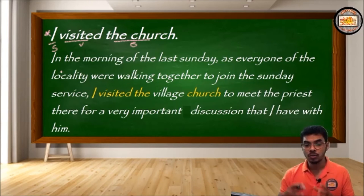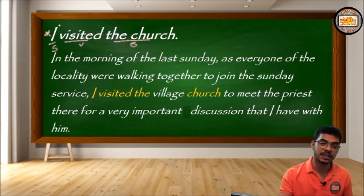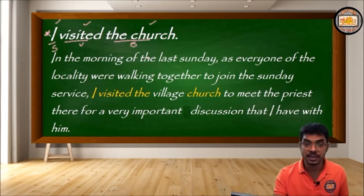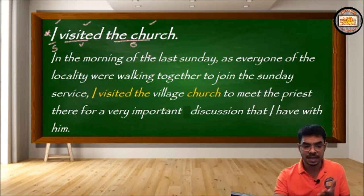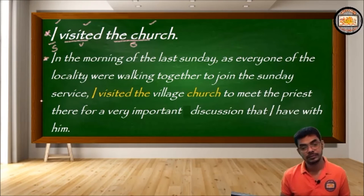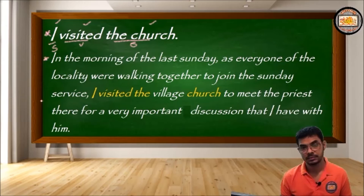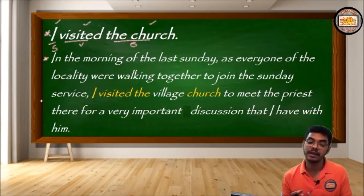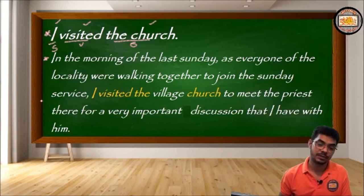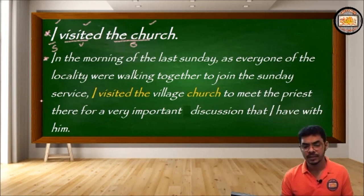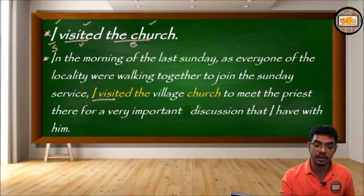This basic sentence provides only two pieces of information: who visited — 'I' — and where — 'the church.' Not much information is there. But what happens when we want this sentence to get elaborated? When we want to add something to the sense of all these components — the subject, the verb, the object — when we want to explain something or add more detail?